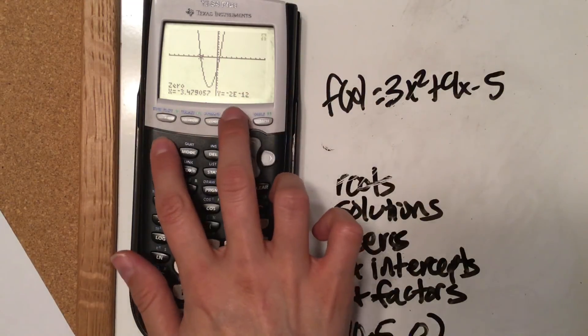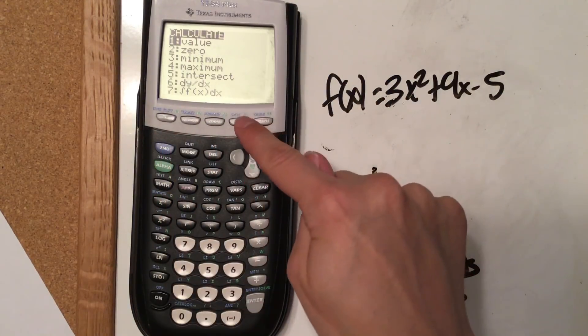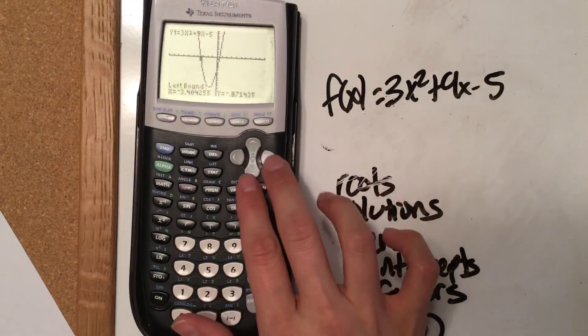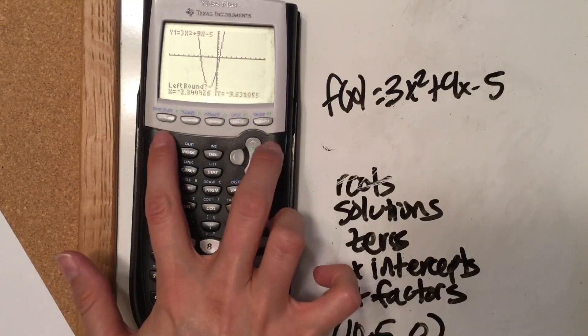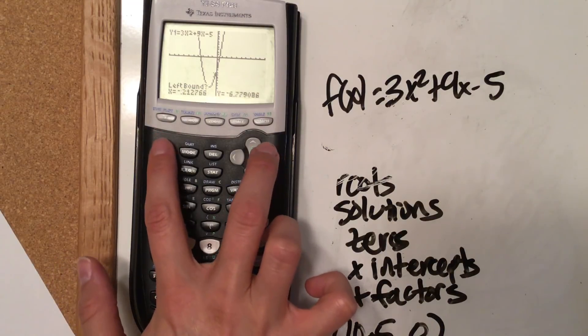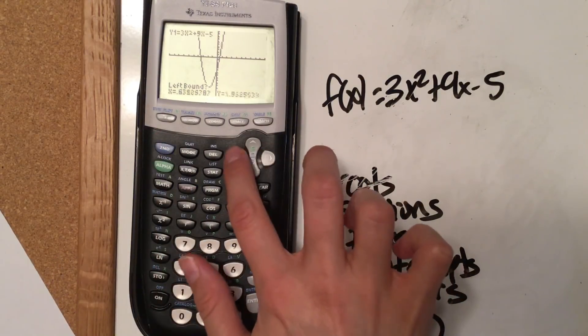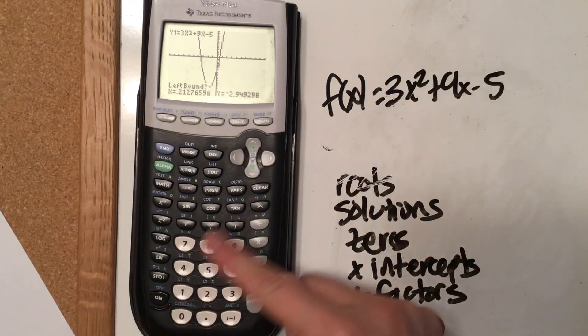So I'm going to hit 2nd, calc again, and I'm going to find the second zero. I know that it's in between 0 and 1, or you can move your cursor. We didn't move our cursor last time. Again, to move your cursor quickly, you can hit 2nd and then over. I went too far, so I'm going to have to backtrack.